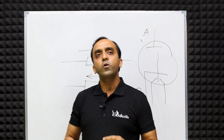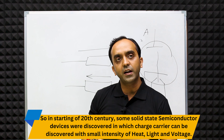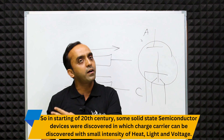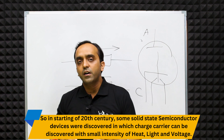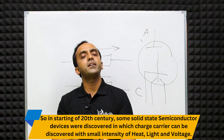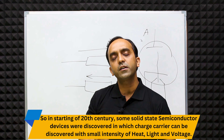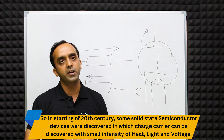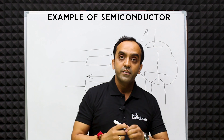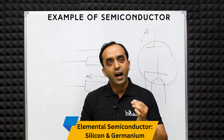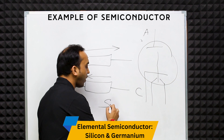Semiconductor devices resolved all these issues and removed the demerits of vacuum tubes. In the 20th century, the semiconductor became very popular and we are using it in almost all electronic devices. The semiconductor allows us to control conductivity using heat, light, or a small amount of voltage.